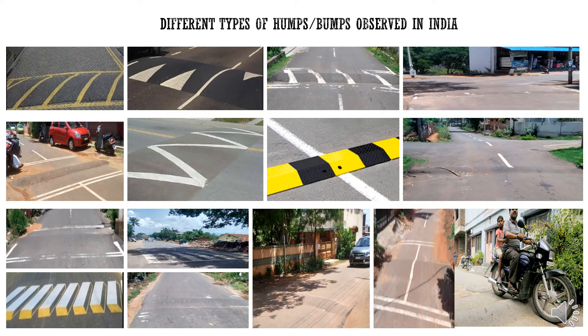Speed humps on minor roads, according to IRC-099 guidelines of the Indian Road Congress, should span a width of 3.5 meters and a height between 10 to 12 centimeters. A warning sign needs to be present 40 meters ahead of the speed hump or bump to adjust the vehicle speed. Speed humps should be painted to make them visible to commuters and illuminated by solar cat eyes to assist road users during night time. Speed humps are designed to bring vehicles down to safer crossing speeds of around 25 kilometers per hour.